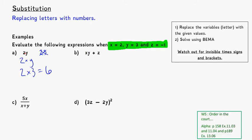So again here, another invisible times sign between the x and the y. So let's look at this one. If x is 2, I'm going to say 2 times y, which is 3, and then plus z, which is a negative 1, so plus a negative 1.